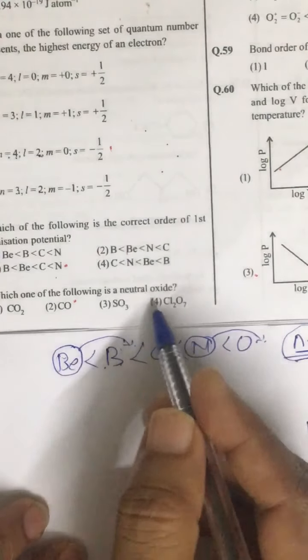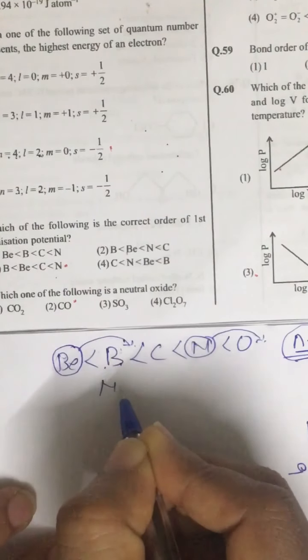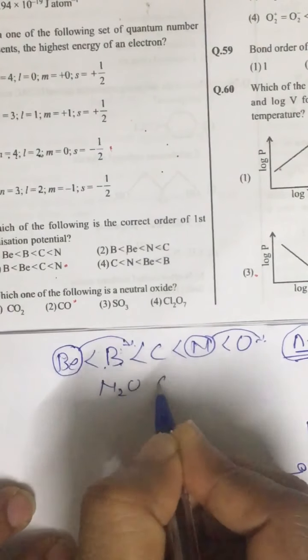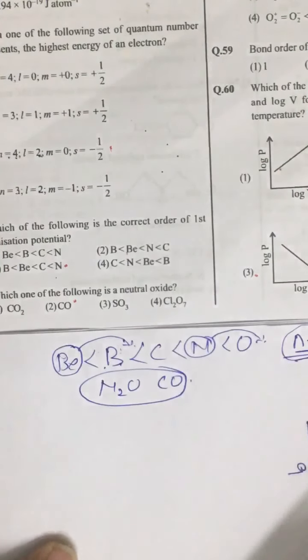Now which is neutral oxide that you must remember that N2O and CO they are neutral oxides. So correct answer is second option.